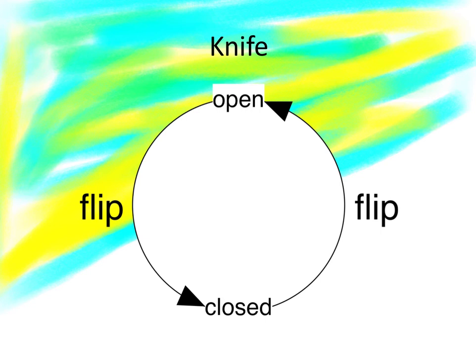If you open the knife, then close it, that's flipping it and flipping it, and you get back to the same state. Flip it twice, you get the same state. Flipping it twice is identity.